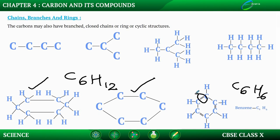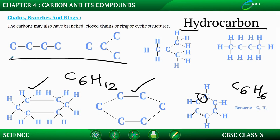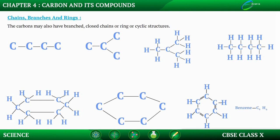All of these carbon compounds which contain just carbon and hydrogen are called hydrocarbons. The saturated hydrocarbons, which have only single bonds, are called alkanes. In unsaturated compounds, if there is a double bond, it is called an alkene, and if there is a triple bond, it is called an alkyne. So the three classes are alkanes, alkenes, and alkynes.